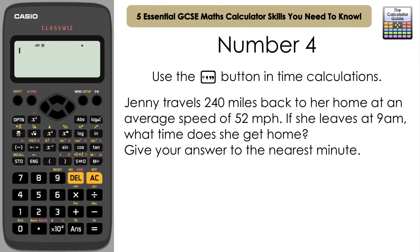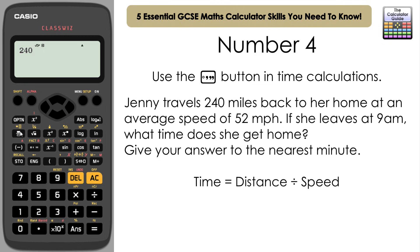The fourth essential skill is how to use the degrees, minutes, and seconds button to do time calculations. Let's look at this question: Jenny travels 240 miles at an average speed of 52 miles per hour. If she sets off at 9am, what time does she reach home? Give your answer to the nearest minute. We know time equals distance divided by speed, so 240 divided by 52 gives us this fraction — let's look at that as a decimal.